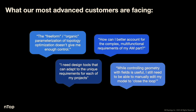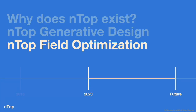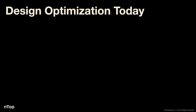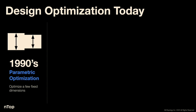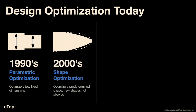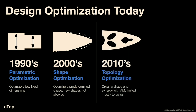Customers also need to manually edit models to close the loop — the geometry out the other end needs to plug back into modeling functions. This is why we introduced field optimization. Design optimization has evolved: in the 90s, parametric optimization optimized a few fixed dimensions; in the 2000s, shape optimization optimized a predetermined shape. Topology optimization is open and freeform, working well with additive manufacturing, but limited mostly to solid geometry. So today we're introducing field optimization: a flexible, open, multi-scale optimization framework built specifically for implicit modeling and field-driven design.